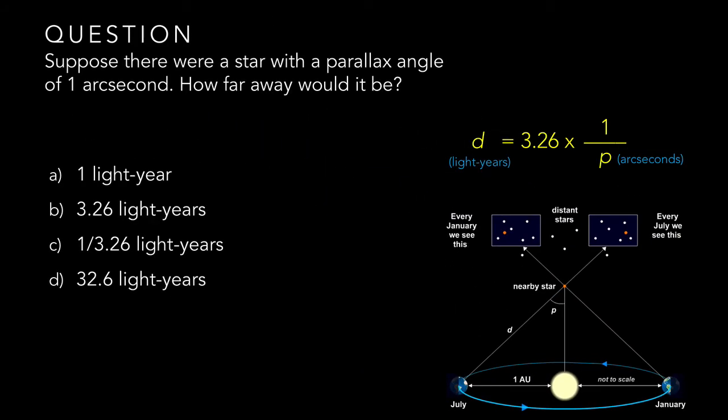Before we continue, check your understanding of the parallax formula by answering this question. Suppose there were a star with a parallax angle of 1 arcsecond, how far away would it be? Would its distance be 1 lightyear, 3.26 lightyears, 1 over 3.26 lightyears, or 32.6 lightyears? The answer is b, 3.26 lightyears, which you can see simply by substituting 1 for the angle P in arcseconds, which makes d equal to 3.26 lightyears.